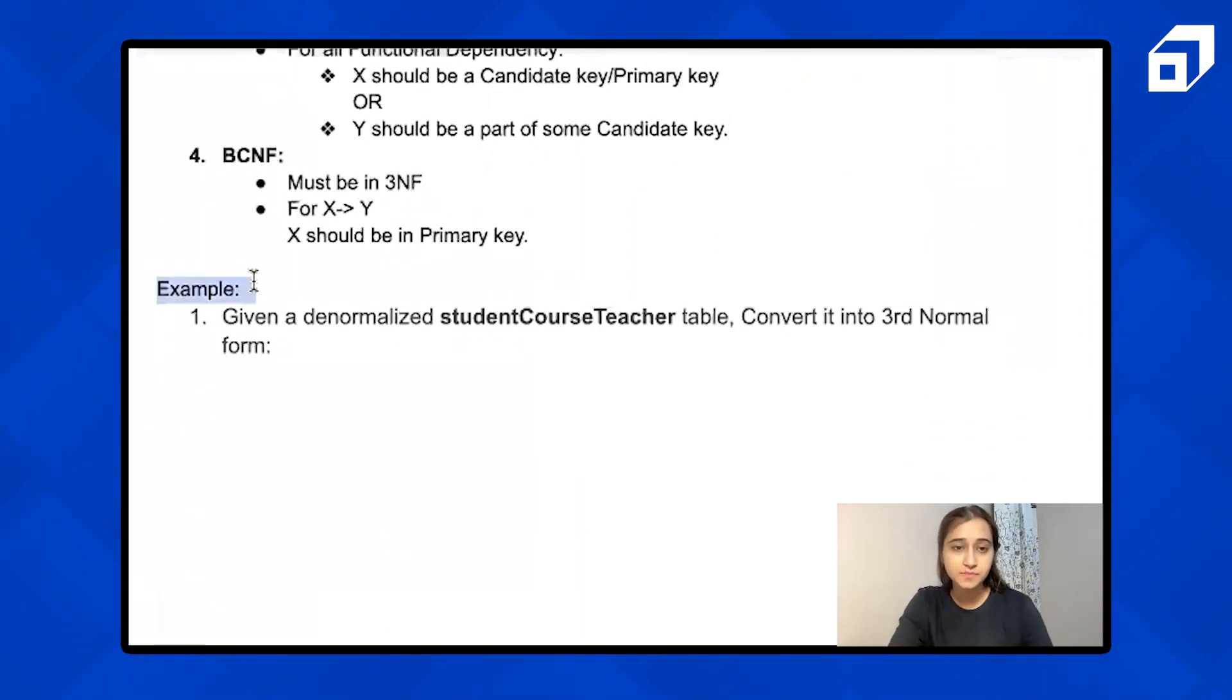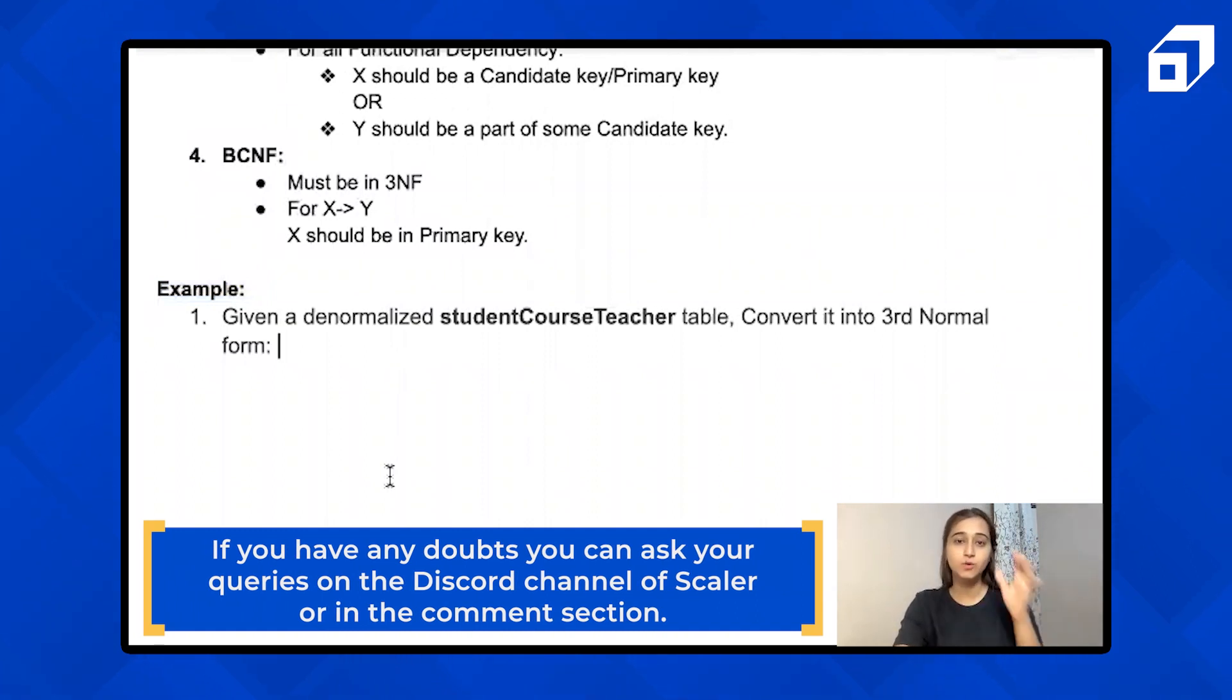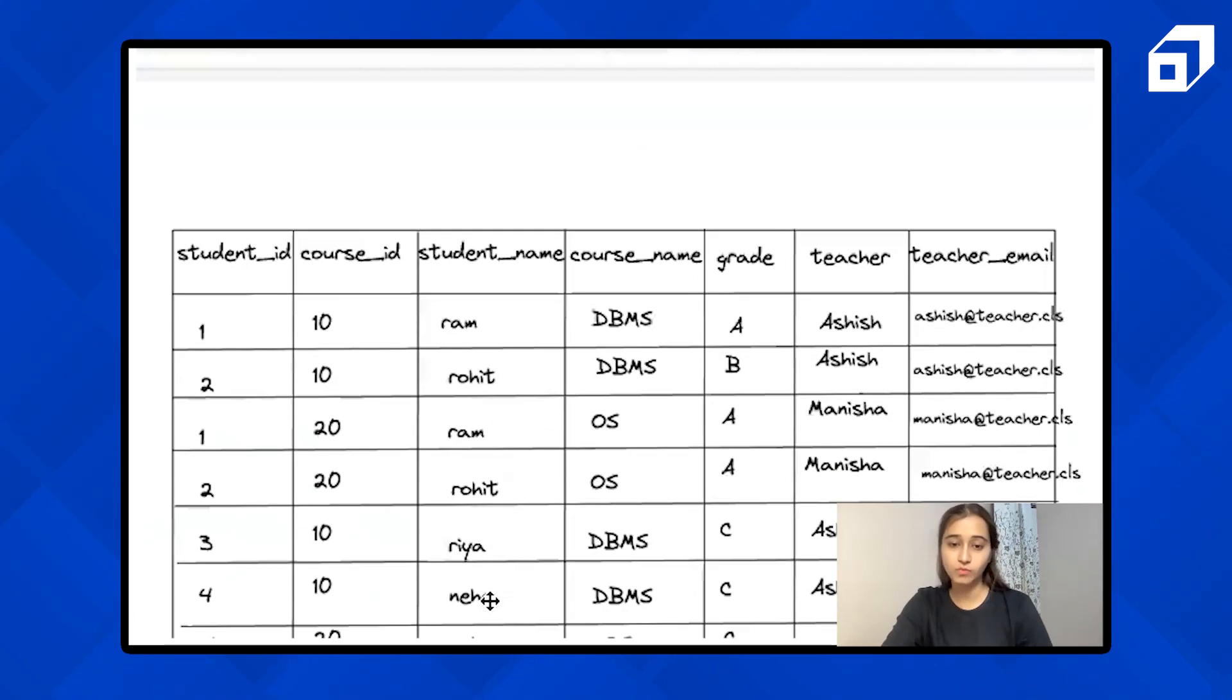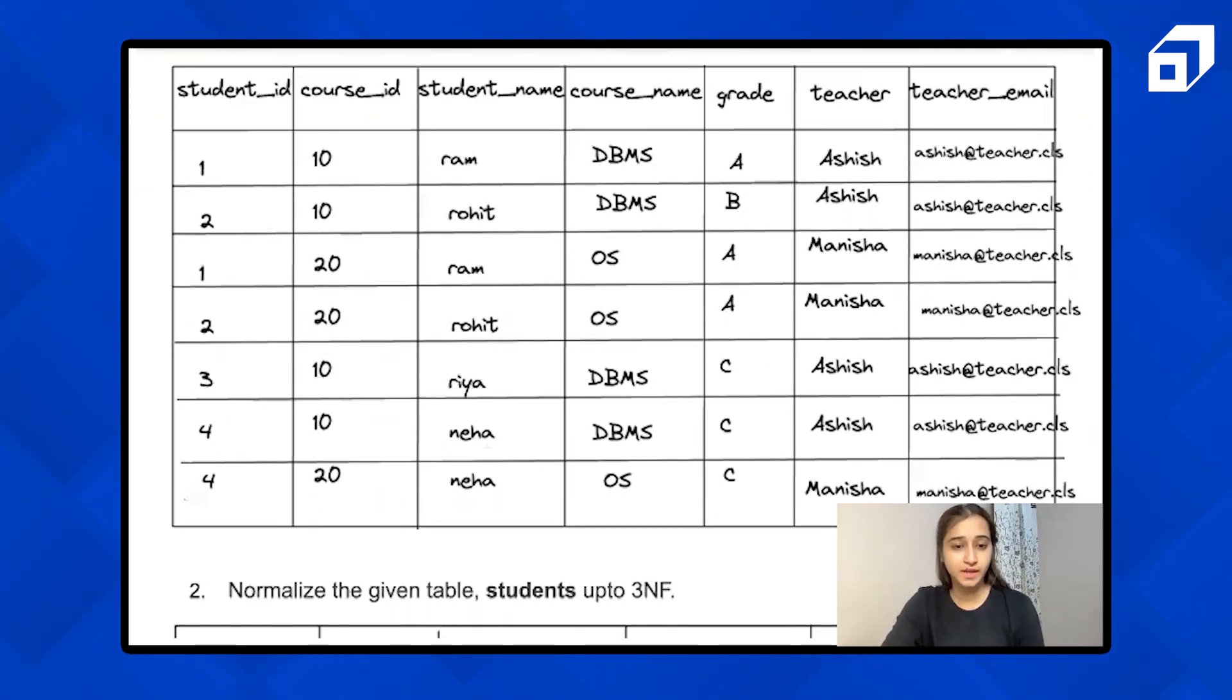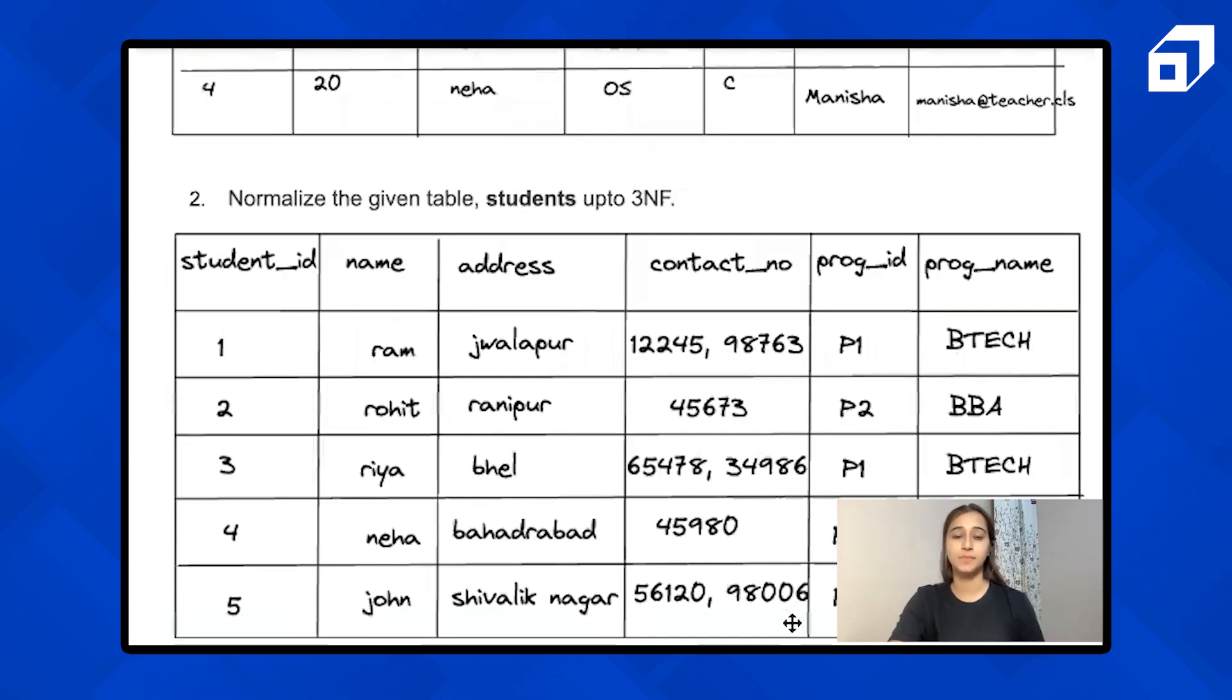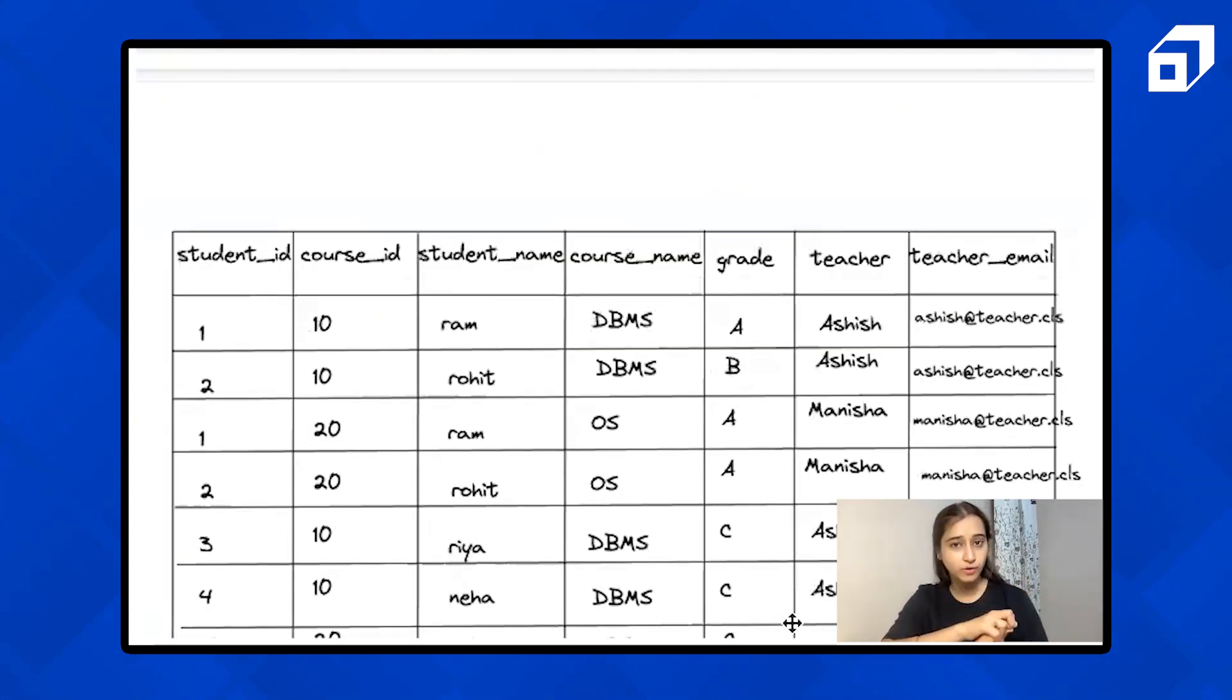Now these are some of the examples. You have to solve it. If you have any doubts, you can ask your query in the Discord channel of Scalar, and you can ask the queries in the comment section also. The very first one is you are given a denormalized student course teacher table. You have to convert it into third normal form. First check if it is in third normal form, no need to convert. If it is not, you have to normalize it. Second question, you have to normalize the table students up to 3NF. Third one is, consider this table and check whether it's in 2NF or not. Or if it's not, you have to decompose and normalize this table. These are three examples given to you. Take the screenshot and try to solve it on your own.